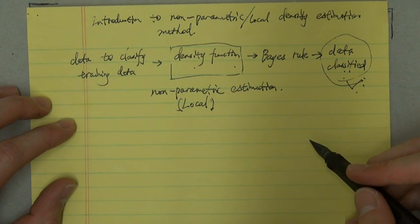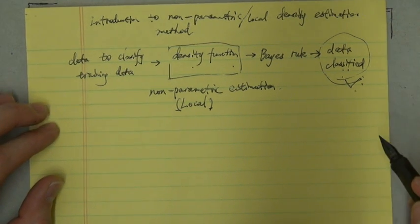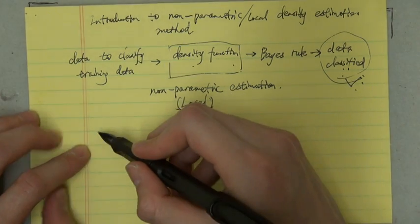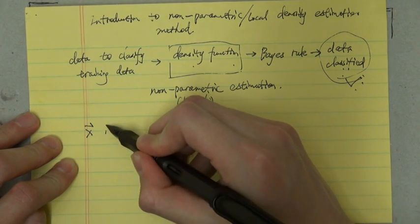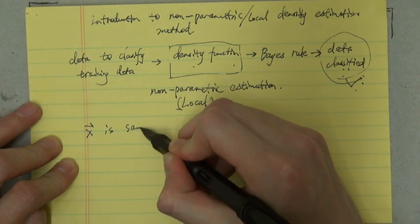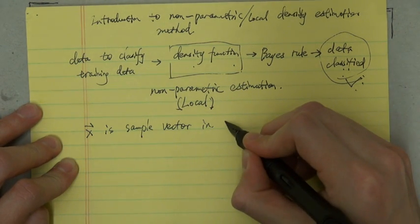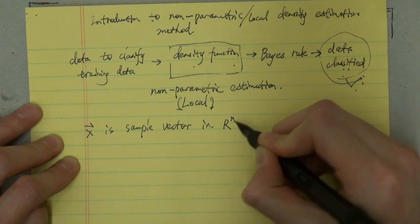So in the following, we will introduce the basic principle of the local density estimation. So here, we assume x⃗ is a sample vector in an n-dimensional feature region R^n.